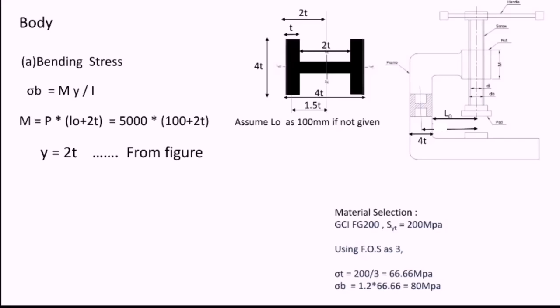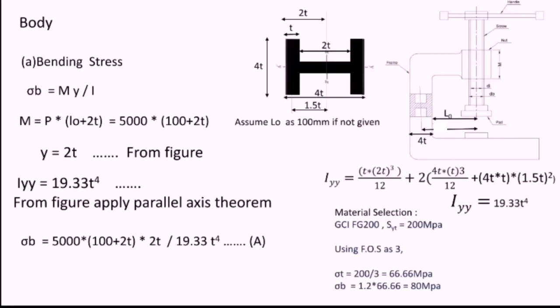I is moment of inertia about Y axis. Moment of inertia of this I section has been calculated on the right hand side. We got the answer for IYY as 19.33t⁴. Substituting all the values in the above equation, I will get σB = 5000(100+2t)·2t/(19.33t⁴). Let this be equation A. This equation A gives us the value of the bending stress acting on the body.